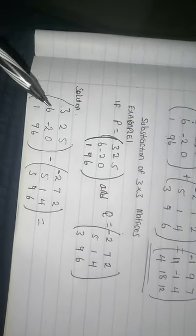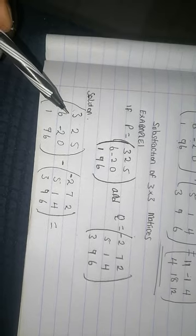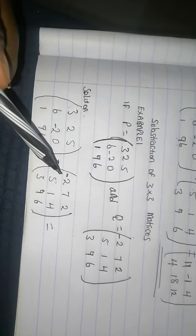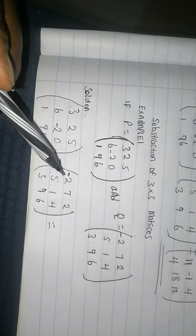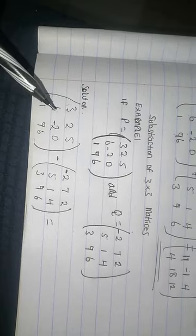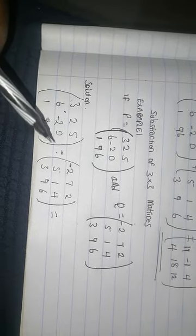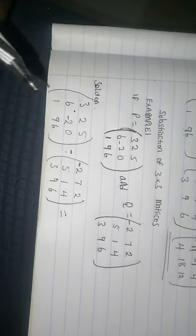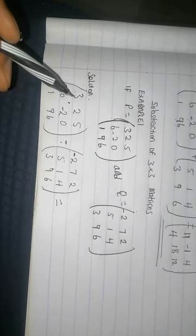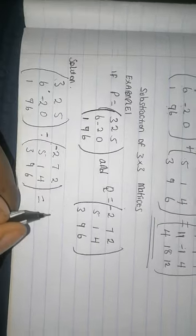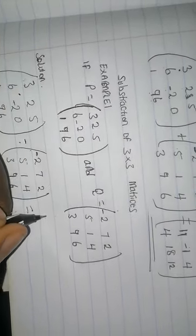So our first step is taking the 3 in the first column and in the first row. And then I subtract negative 2 in the Q matrix. So I will take 3 minus minus 2. So when you take 3 minus minus 2, this sign will change automatically to positive sign. So it will be 3 plus 2, which equals 5.